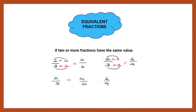These three fractions have the same value. I multiplied the original by 2 and got 4 by 6; if I divide 4 by 6 by 2, I'll get back 2 by 3. I took 2 by 3, multiplied by 3, and got 6 by 9. If I take 6 by 9 and divide it by 3, I'll get back 2 by 3. So, these three fractions are called equivalent fractions or equal fractions.